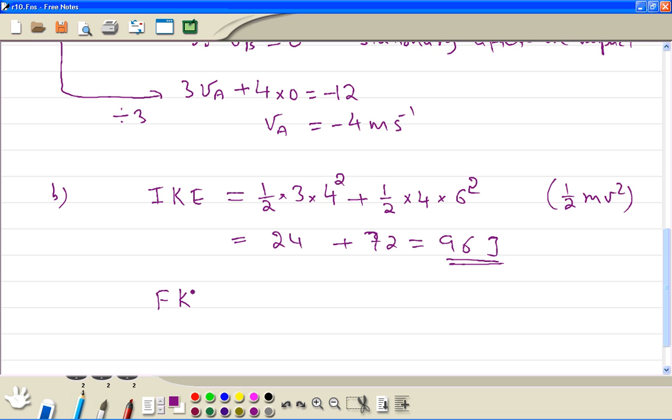So the final kinetic energy is equal to half mass of A, which is 3, times this velocity, which is 4 squared. So the negative sign doesn't mean anything because we're going to square it, so we always get a positive answer. Plus half times the object B, which is 4, if the velocity is 0. So this is 24 Joules.